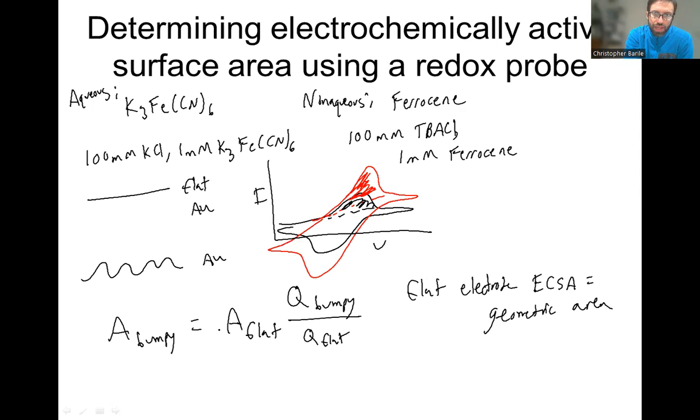Then you'd get that my bumpy electrode is twice the area of the flat electrode in terms of its electrochemical active surface area.